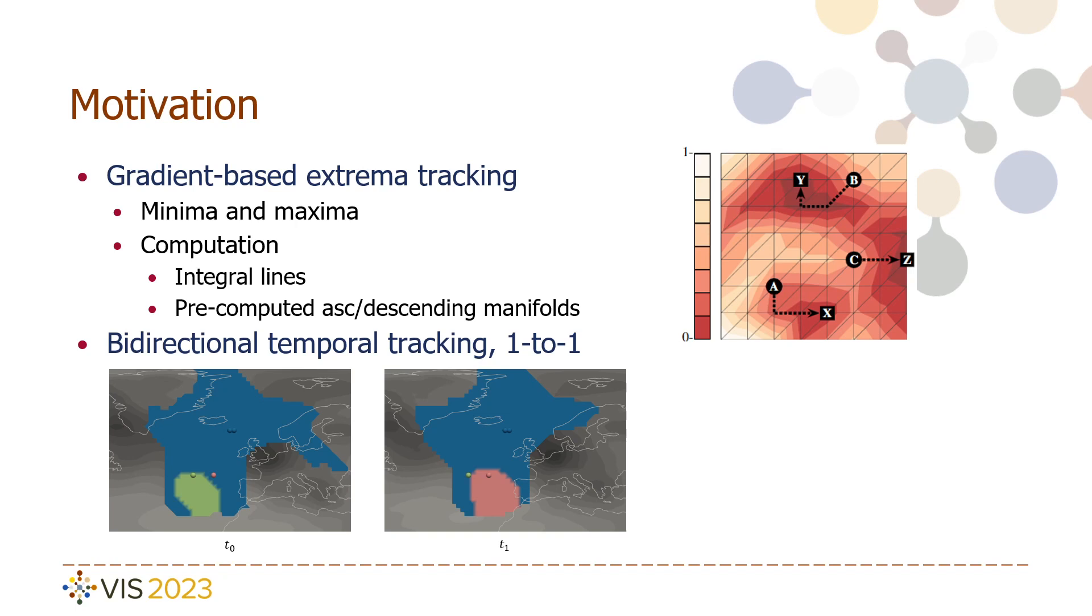We have a large blue manifold and two smaller ones in each time step. The extrema are adjacent to the boundaries of the manifolds, but since they do not overlap, the one-to-one gradient tracking will not be able to capture this connection despite the light green and pink extrema being spatially close.